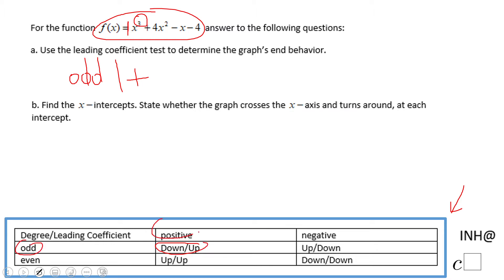Degree 3 means odd and the leading coefficient of 1 means positive. So odd and positive is this situation: odd and positive is giving us down/up. So the graph is coming from down here and it's going to go up. That is what it means: down here, up here.